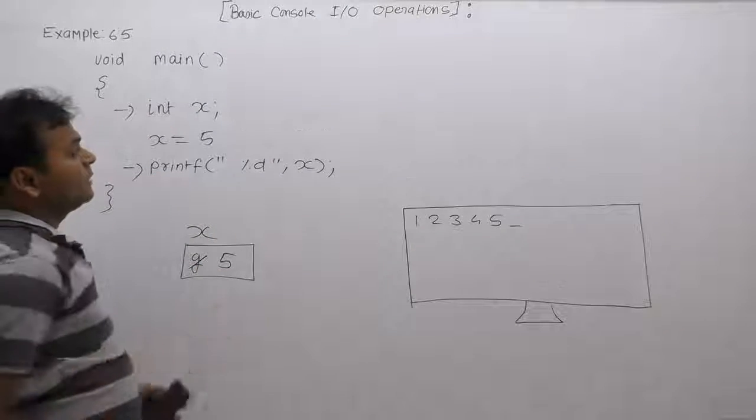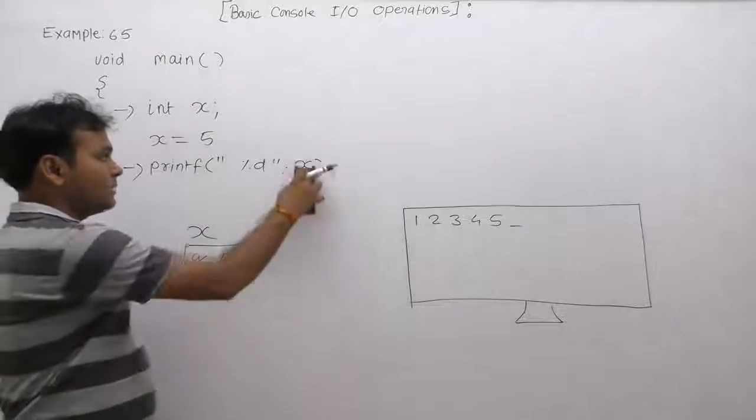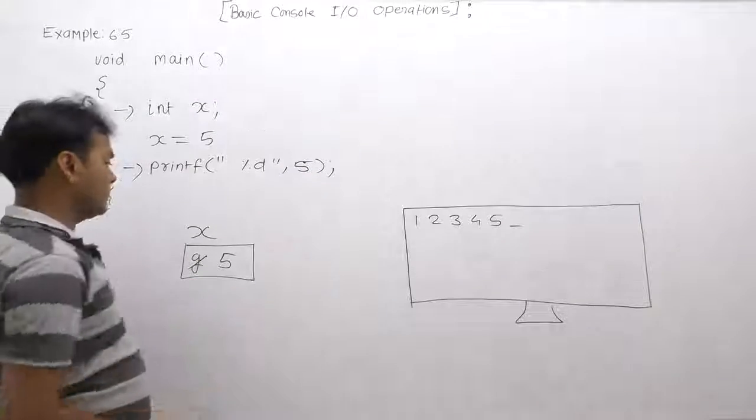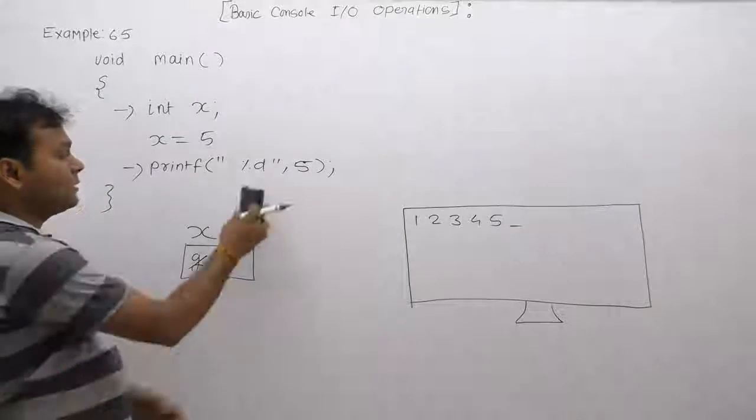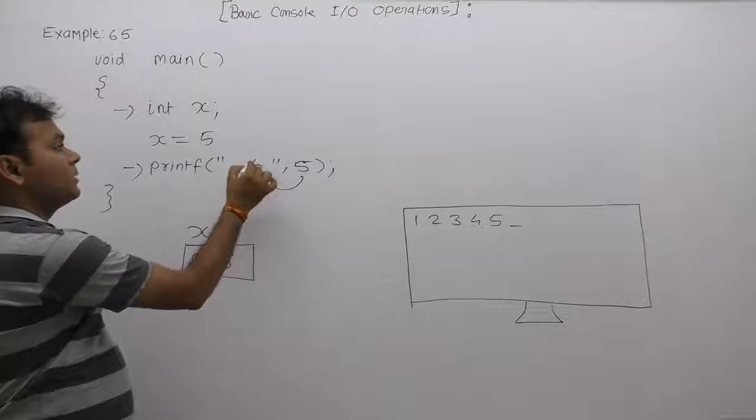In the next printf, in place of %d, value of x is replaced. Value of x is 5. Current value of x is 5, and in place of %d it will replace the argument as 5.